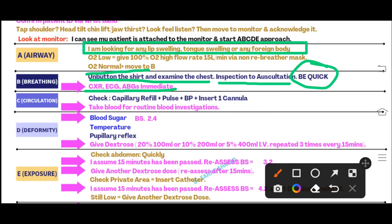For C — Circulation: say 'I am going to check capillary refill, pulse, and blood pressure of my patient.' Since the patient is unconscious, you are talking directly to the examiner. In this station, capillary refill, pulse, and blood pressure will all be normal. Then say: 'I am going to insert one large-bore IV cannula.' After inserting the cannula, take blood for routine investigations including CBC, blood sugars, renal function, and liver function.